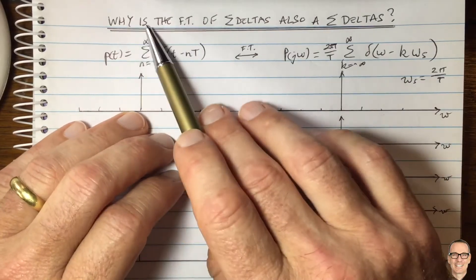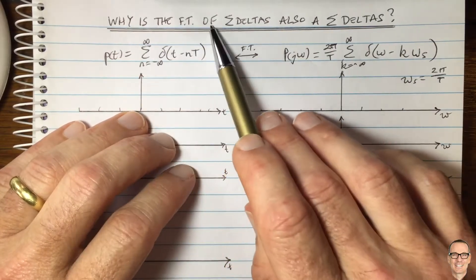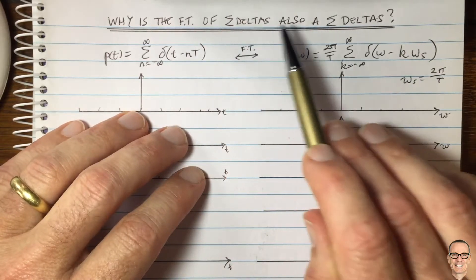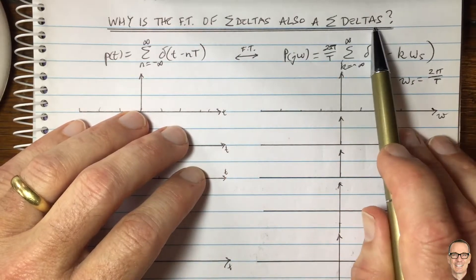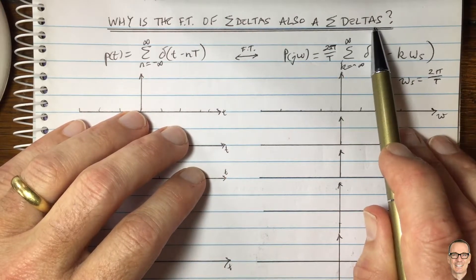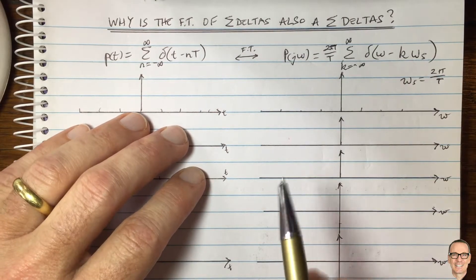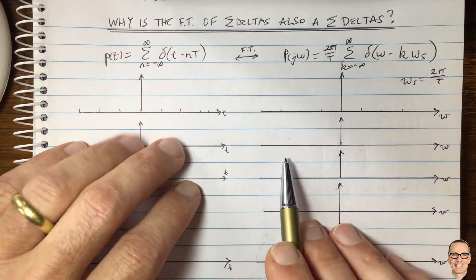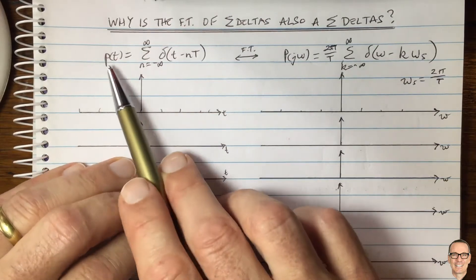So let's look at why the Fourier transform of a sum of delta functions is also a sum of delta functions. This is something that comes up in digital sampling and it's often counterintuitive and quite confusing. So let's look at this.